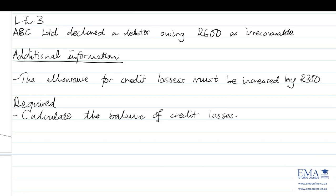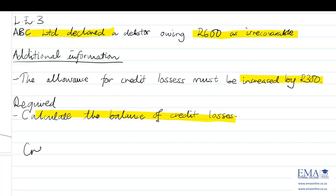Moving on to the third scenario — a formulated example: ABC Limited declared a debtor owing 600 rand as irrecoverable. Under additional information, the allowance for credit losses must be increased by 300 rand. You are required to calculate the balance of credit losses. Since the debtor is irrecoverable, credit losses start at 600 rand. The allowance must be increased by 300.